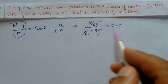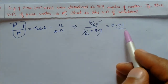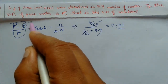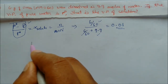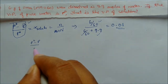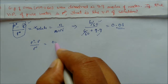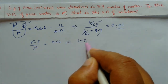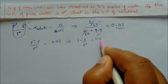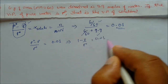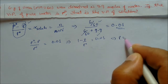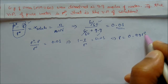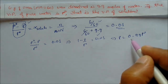Solving the mole fraction gives 0.01. So P naught minus P divided by P naught equals 0.01, which means 1 minus P by P naught equals 0.01. On solving, we get P equal to 0.99 P naught. So this is the vapor pressure of the solution.